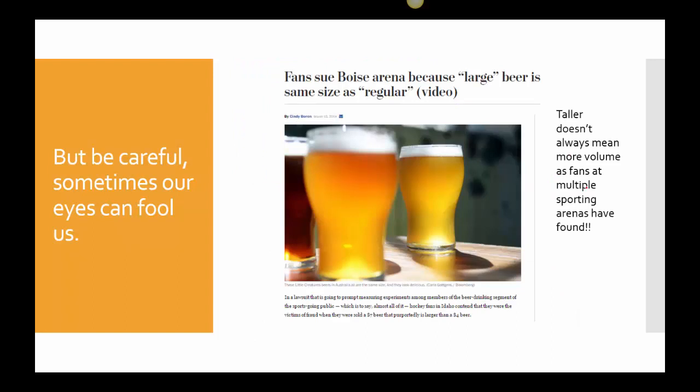Sometimes geometry can kind of deceive the eye. So I thought it'd be important to just show you. Be careful. Sometimes when things are drawn taller, you're like taller is bigger. Taller is better. I got more stuff. And you didn't. So I wanted to show you this lawsuit. It says Fancy Boise Arena because large beer is the same size as a regular beer. A large beer was $7. A small beer is $4. And it didn't take too long for somebody to be like, how much more beer did I get? And they took a small beer and they poured it into the cup from a large beer. And they found out I just paid $7 for a $4 beer, which means lawsuit. That didn't singularly happen in Boise. This was happening a lot of places. So that changed. And a lot of times it is the consumer having to kind of yell out, here's what's going on.